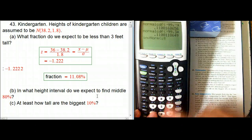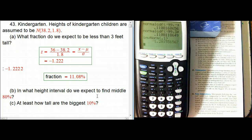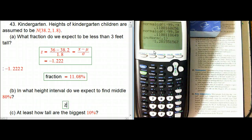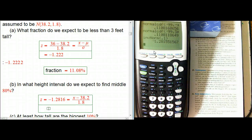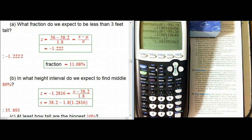We do inverse norm of 0.1 for the standard normal result. The z-score corresponding to the 10th percentile is minus 1.2816. That's supposed to equal x minus mu over 1.8, so solving for x gives 38.2 plus negative 1.8 times 1.2816, which evaluates to about 35.89 — approximately 35.9 inches.